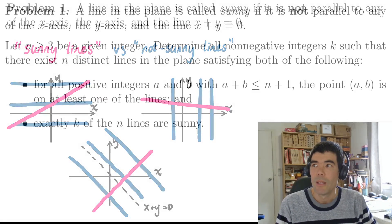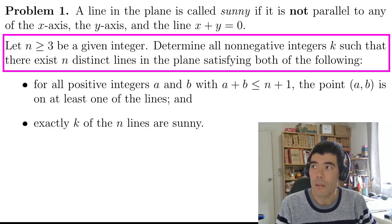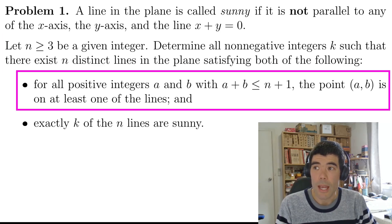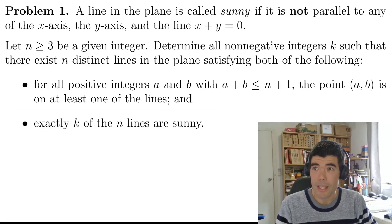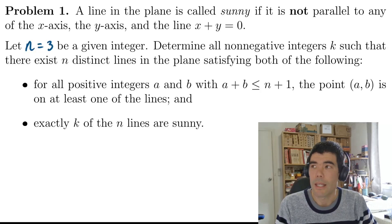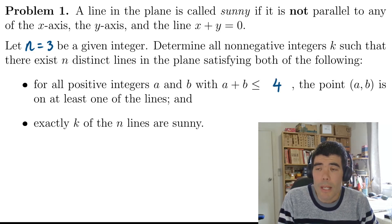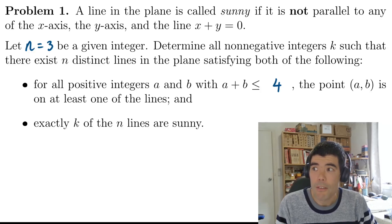Now the next part of the problem: let n be an integer, three or greater. Determine all non-negative integers k such that there exist n distinct lines in the plane satisfying both of the following: for all positive integers a and b with a plus b less than or equal to n plus one, the point (a, b) is on at least one of the lines, and exactly k of the n lines are sunny.